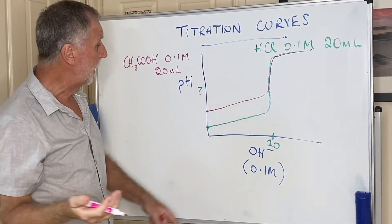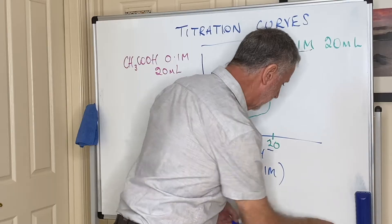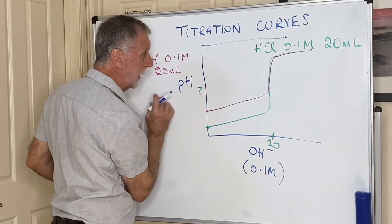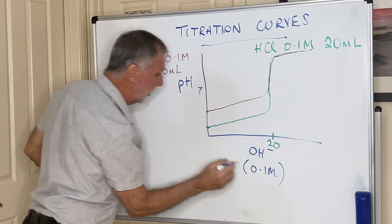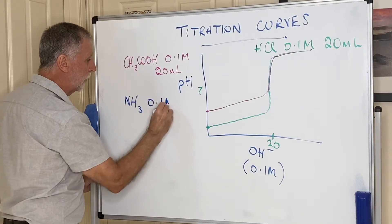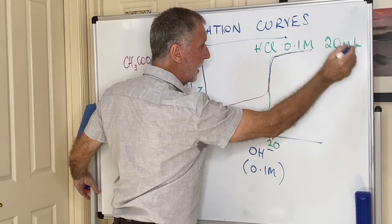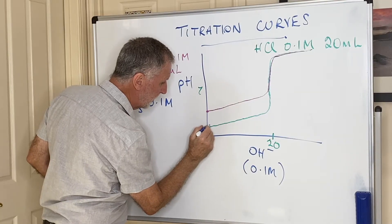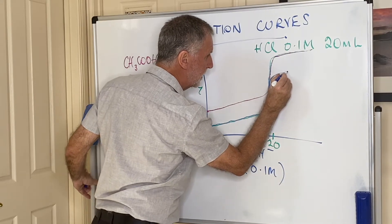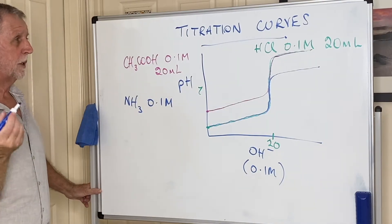That vertical section is clearly not as big as in the first one because the pH started obviously higher. Now let's say we do a third reaction — we start with HCl again, but instead of adding a strong base like NaOH we're going to add a weak base like ammonia at 0.1 mol/L. It would follow the same line, rise, but then tail off at a much lower pH than before.